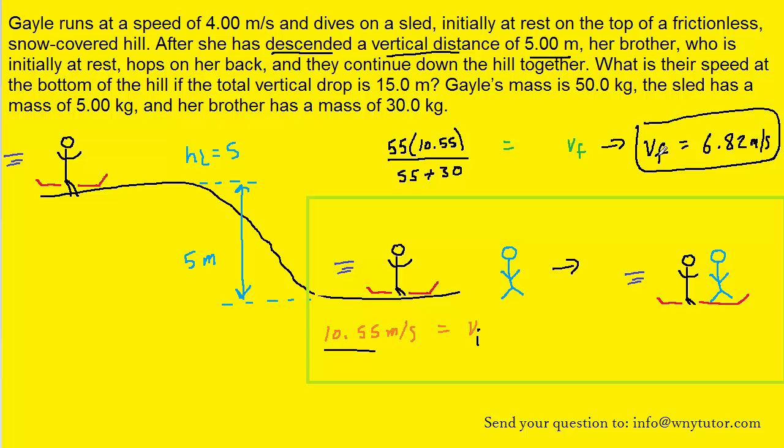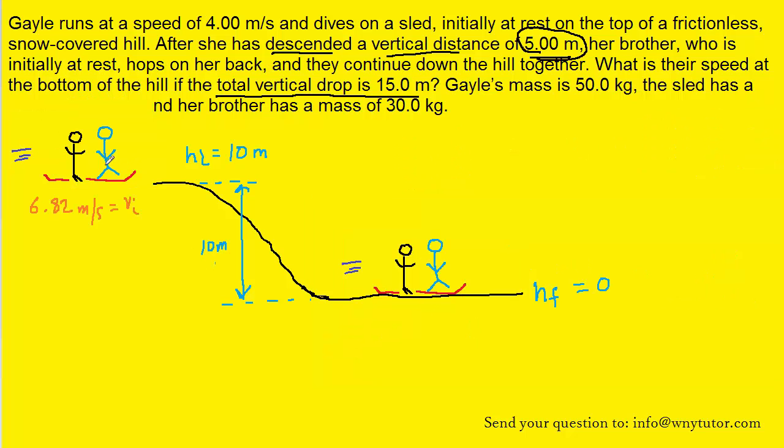But there's one more segment here. Here are Gale and her brother descending an additional 10 meters to get to the very bottom of the hill. You might be wondering why it's an additional 10 meters. Well, recall that Gale had already descended by 5 meters earlier in the problem. The question states that the total vertical drop is 15 meters. So if Gale had already fallen by 5, that means she and her brother have to fall by an additional 10 to make the total vertical drop 15. So that's why we've labeled this height as being 10 meters.